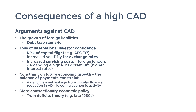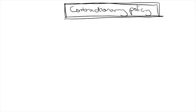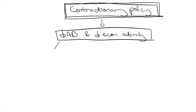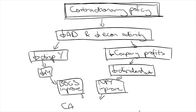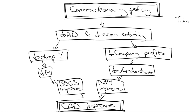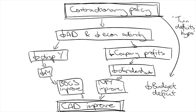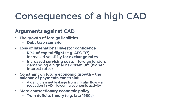One more consequence of a high CAD is more contractionary economic policy. Both BOGS and NPY tend to worsen with strong domestic economic growth, so to improve the CAD the government could use contractionary macroeconomic policy. By slowing down the economy, disposable income would fall leading to less spending on imports and an improved BOGS. Company profits would also fall, causing less dividend outflows and improving NPY. Furthermore, there's the twin deficits hypothesis — an extension concept theorizing that budget deficits lead to greater current account deficits. The Keating government did pursue this contractionary approach in the late 1980s.